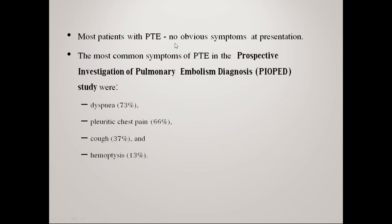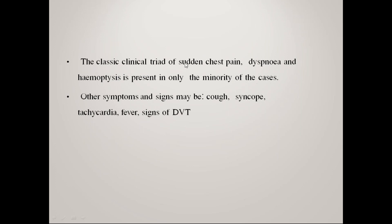Most patients with pulmonary thromboembolism have no obvious symptoms at presentation. The most common symptoms include dyspnea, pleuritic chest pain, cough, and hemoptysis. Most patients will have dyspnea. The classic clinical triad of sudden chest pain, dyspnea, and hemoptysis is present in only a minority of cases. Other symptoms and signs may include cough, syncope, tachycardia, fever, and signs of deep vein thrombosis.